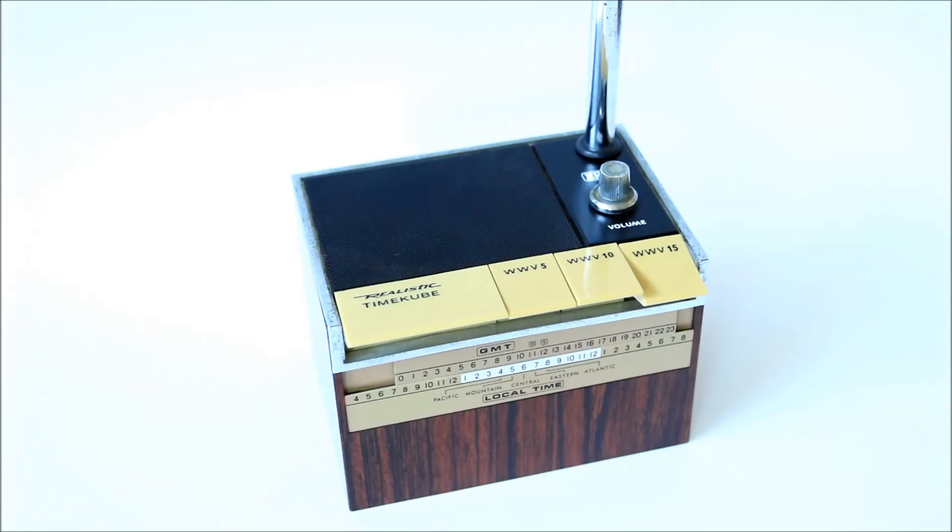For those who haven't heard of WWV, it's a radio signal that you can actually hear on multiple frequencies: 2.5 MHz, 5 MHz, 10 MHz, 15 MHz, and 20 MHz, and that's .000000, which is very, very accurate. It's put out by the United States National Institute of Standards and Technology, NIST, and it gives you the time and some other information both in voice format as well as encoding to radio signal.